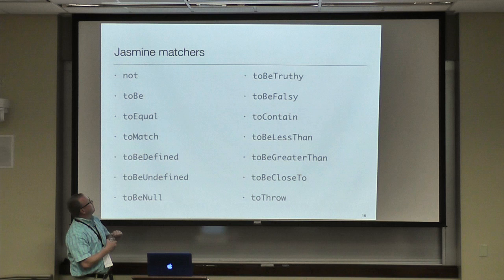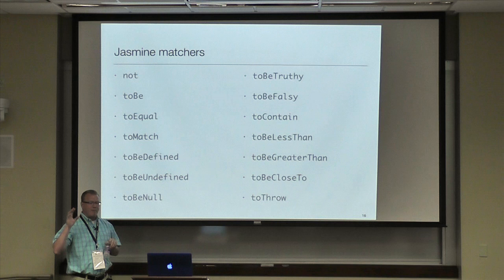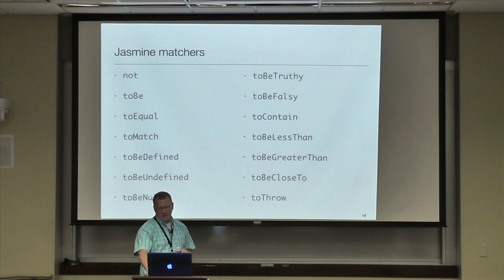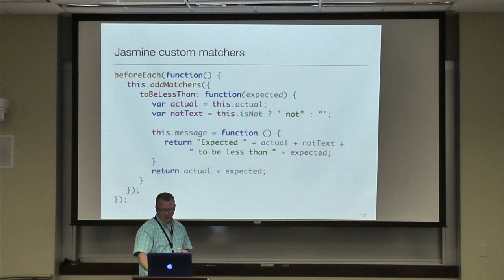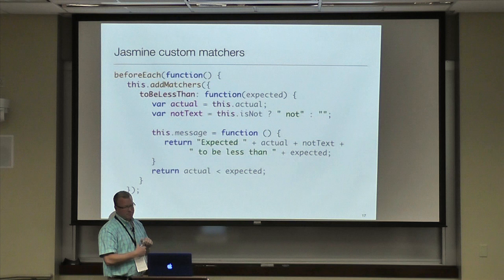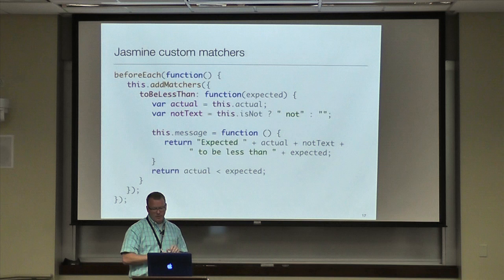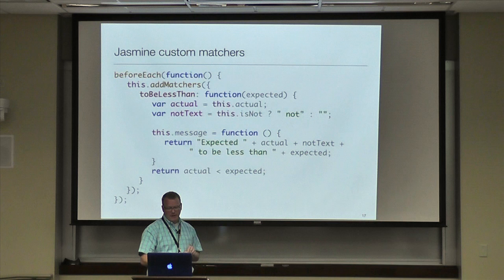Some of the built-in matchers that come with Jasmine — I'll note there are also third-party matchers like jQuery Jasmine matchers that bring a whole bunch of other types of matching if you need to do more DOM manipulation or DOM verification. You can also build your own custom matchers using the `addMatcher` syntax — for example, adding a `toBeLessThan` matcher, setting up a message, and then actually doing the test.